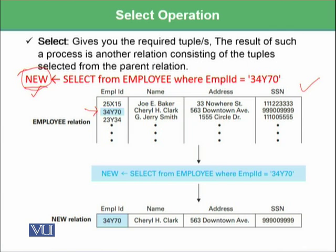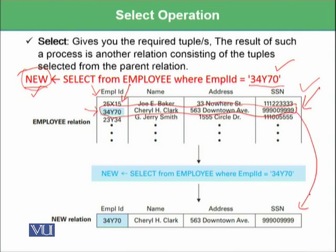You write: select from employee, where employee is this table, where employee ID equals 34570. This compares the employee ID column with the provided value, and wherever it finds 34570, it selects that tuple. So this tuple is selected and forms a new relation having only one tuple — with employee ID 34570, name, address, and SSN.